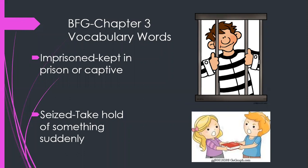So before we start the chapter, we need to go over the vocabulary words so that when you hear them as I read, you're going to understand. For chapter three, there are two main vocabulary words. "Imprisoned" — kept in prison or captive. I've got a little guy there that's imprisoned. "Seized" — take hold of something suddenly. As you can see, it looks like a brother and sister, and she's trying to seize the book away.